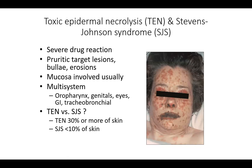Toxic epidermal necrolysis (TEN) and Stevens-Johnson syndrome (SJS) typically result from severe drug reactions, though they can be associated with infections and autoimmune disease. Clinically, lesions are very pruritic with bullae and erosions. Extreme skin pain even before visible clinical lesions is a worrisome sign predicting TEN or SJS development. Mucosa is usually involved, and it can be a multi-system disease with widespread whole-body inflammation.